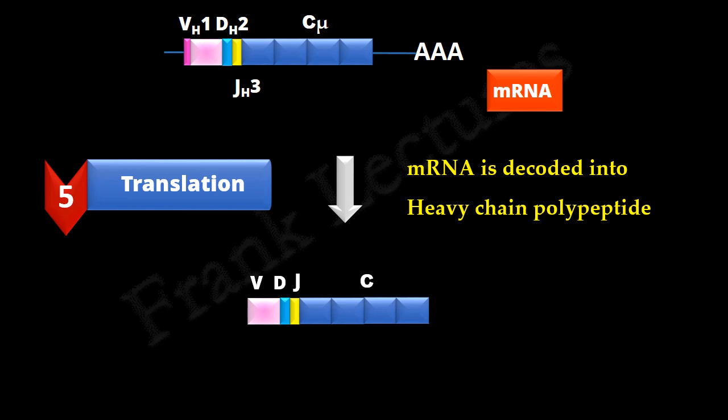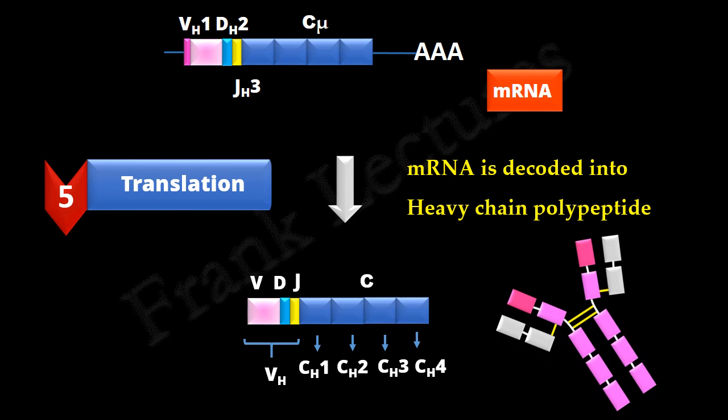Thus, exon formed by the randomly selected V, D, and J gene segment forms the V region of the heavy chain. And these are the four constant domains of mu heavy chain.